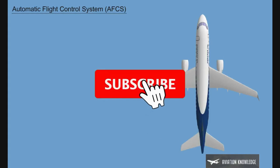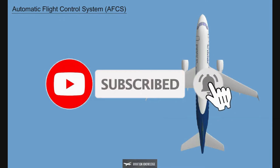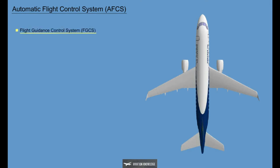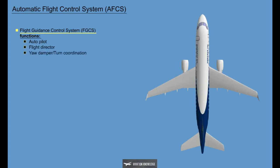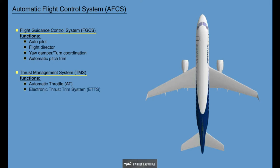The Automatic Flight Control System, AFCS, includes the Flight Guidance Control System, FGCS, and Thrust Management System, TMS. The Flight Guidance Control System functions are Autopilot, Flight Director, Yaw Damper, Turn Coordination, and Automatic Pitch Trim. The Thrust Management System functions are Automatic Throttle, AT, Electronic Thrust Trim System, ETTS, and Thrust Rating Selection, TRS.